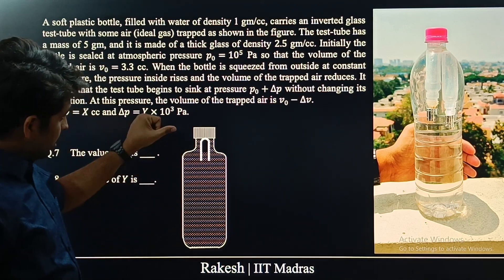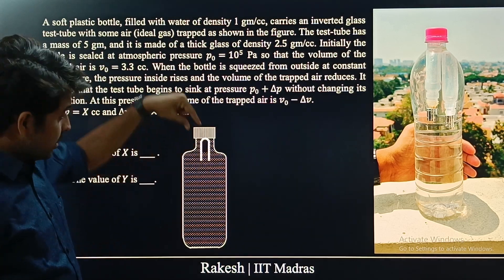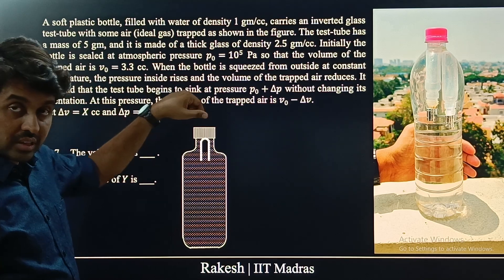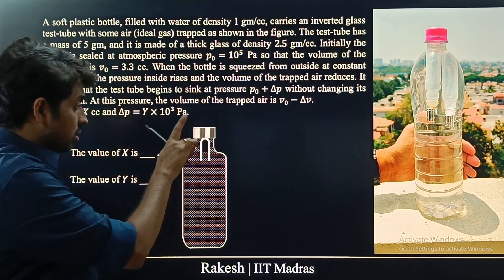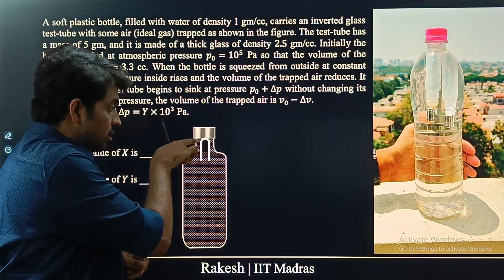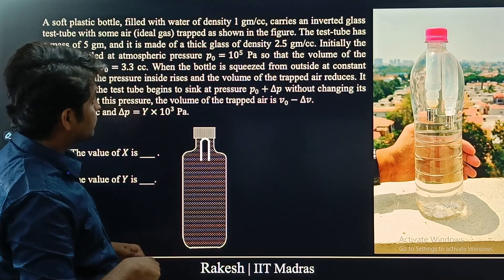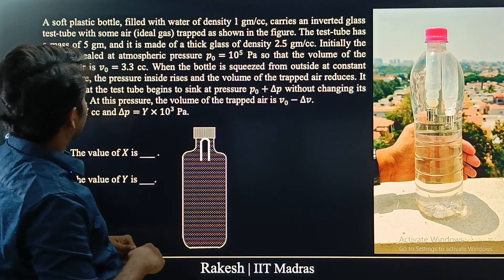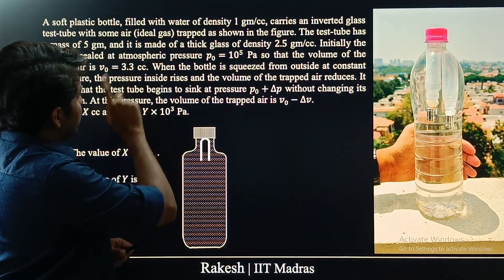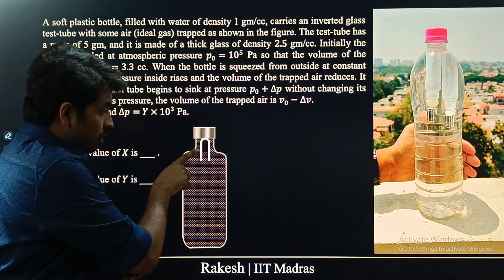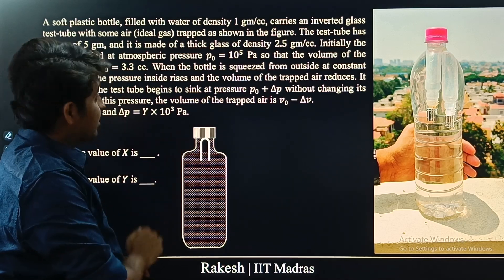What it means is you are filling the bottle with water, putting in the test tube, and closing the lid — so the pressure inside is atmospheric pressure. The volume of the trapped air is 3.3 cc.